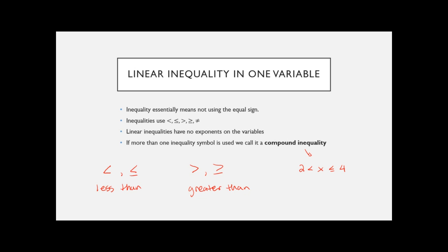We call it a compound inequality because it has two inequalities at the same time. We don't generally have compound equations, but with inequalities we can have multiple solutions that are between numbers — that's why we can group these things together.